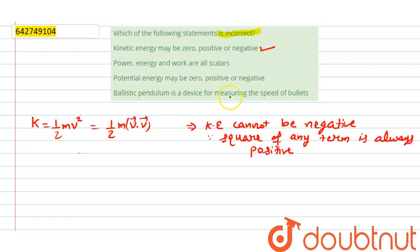Ballistic pendulum is a device for measuring the speed of bullet. This is also a correct option. So we have to choose incorrect option. So we can say that option 1 is the answer.